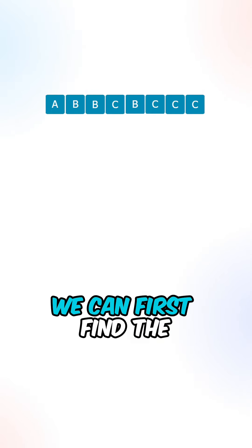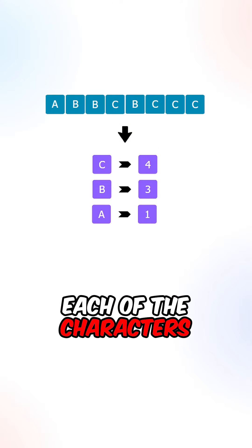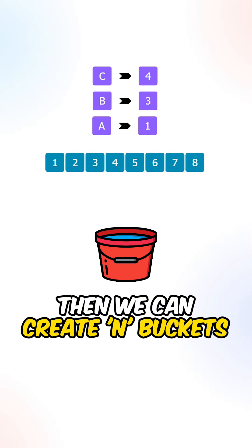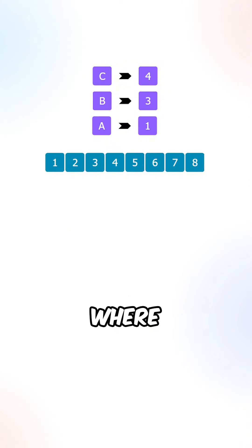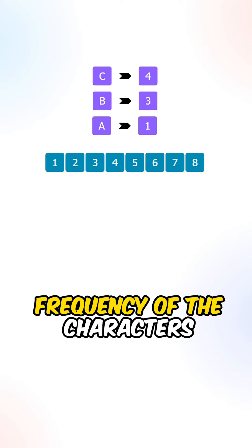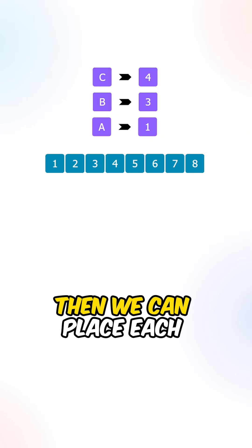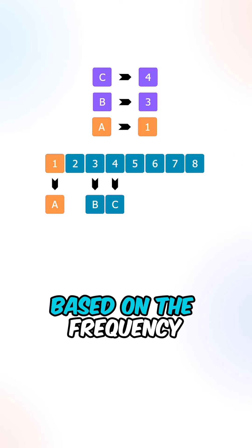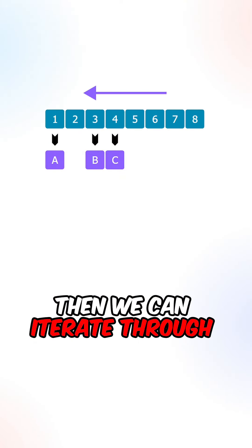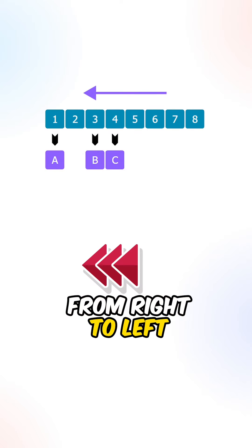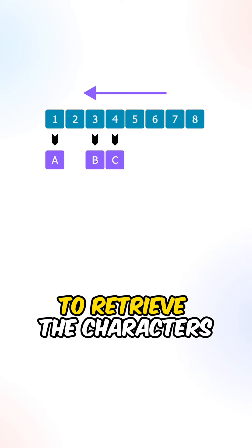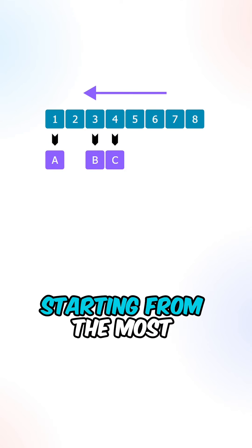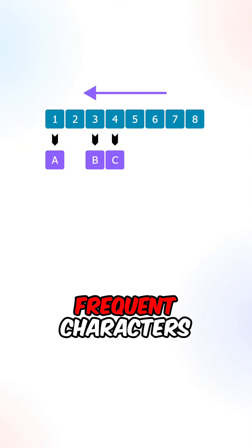We can first find the frequency of each of the characters. Then we can create n buckets, where each bucket indicates the frequency of the characters. Then we place each character into the bucket based on its frequency, and iterate from right to left to retrieve the characters starting from the most frequent.